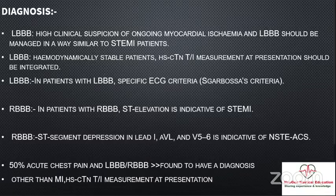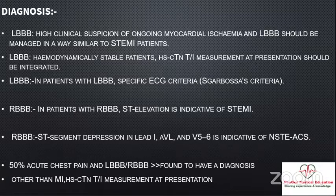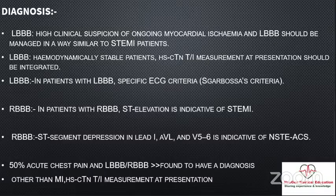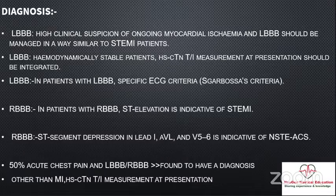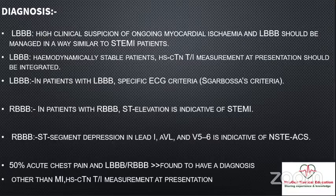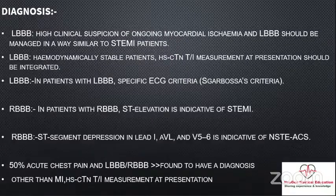Regarding bundle branch block: in general, a patient with left bundle branch block who has high clinical suspicion of underlying ischemia should be treated as a STEMI. For a patient with left bundle branch block who is hemodynamically stable, it is best to wait for cardiac troponin, and you can still apply specific ECG criteria like Sgarbossa criteria to rule out acute STEMI. In right bundle branch block, ST elevation most often indicates STEMI and ST depression indicates non-STEMI. Overall, about 50% of patients with left bundle branch block are found to have an alternative diagnosis rather than acute MI.